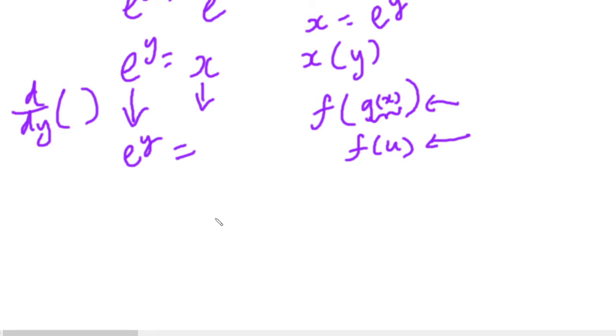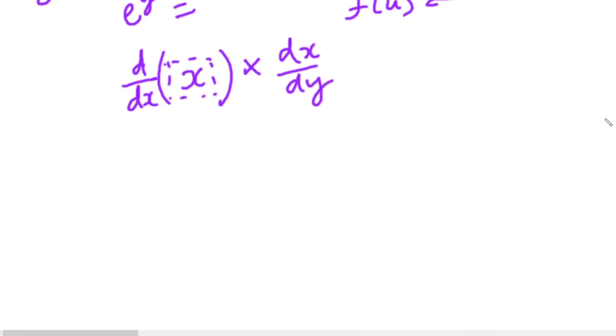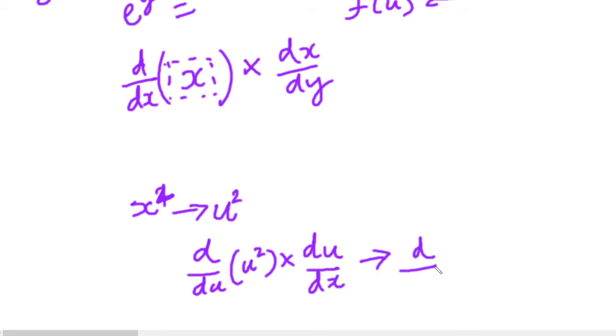So what we're actually going to do here is we're going to let x be some variable that is in terms of y. And first, we're going to differentiate by x, and then we're going to multiply this differential by dx over dy, which is our equivalent of du by dx, if x was u and y was x.